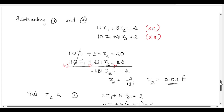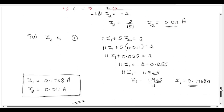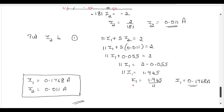Now substituting I2 equals 0.011 into equation 1: 11I1 plus 5 times 0.011 equals 2. Solving gives I1 equals 1.945 divided by 11, or approximately 0.1768 amperes. So we have found both I1 and I2. This is the answer.